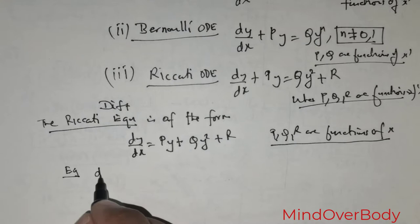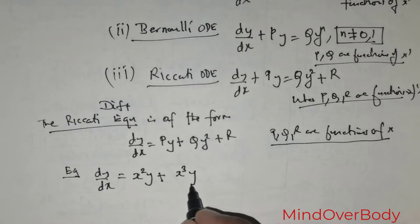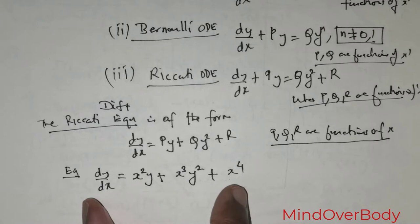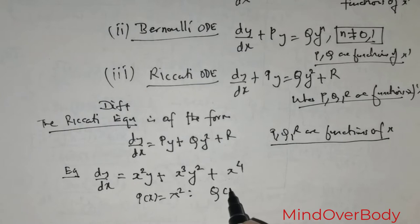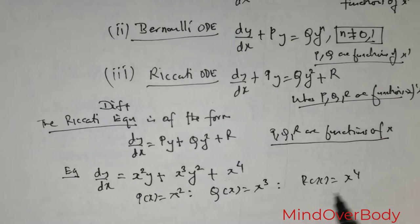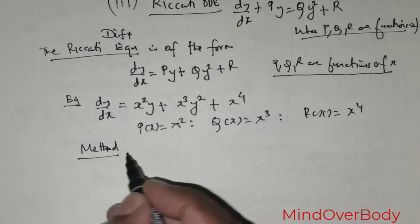For example, suppose dy/dx = some x² times y + some x³ times y² + some x⁴. This is a Riccati differential equation. Clearly p(x) = x², q(x) = x³, and r(x) = x⁴. So that's just an illustration of how to identify the components.